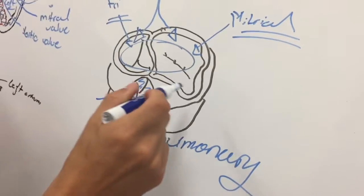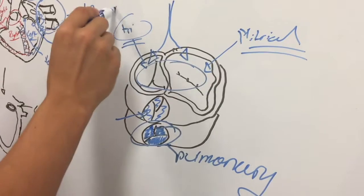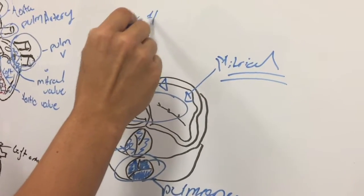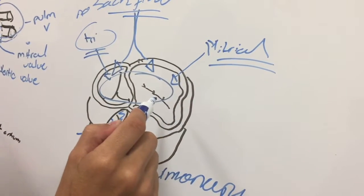Basically, the tricuspid valve prevents backflow to the right atrium, and then you have the bicuspid valve, which prevents backflow to the left atrium.